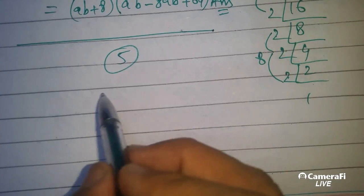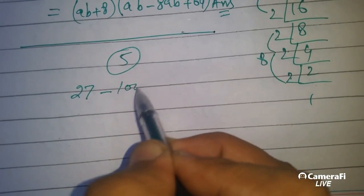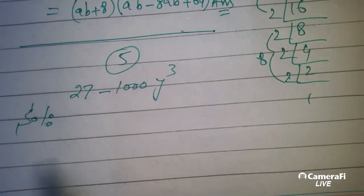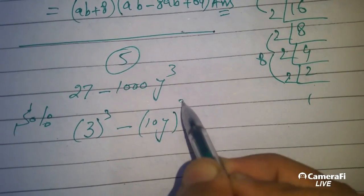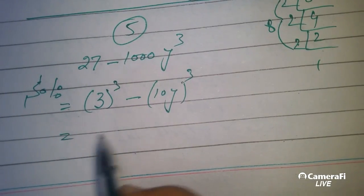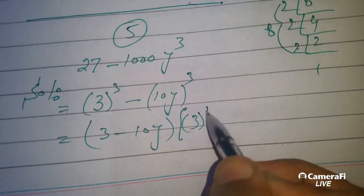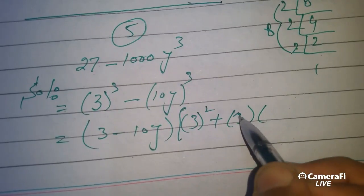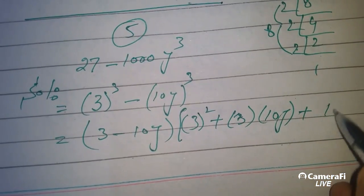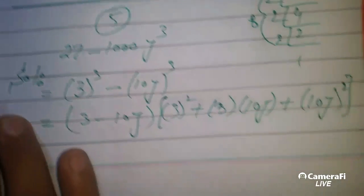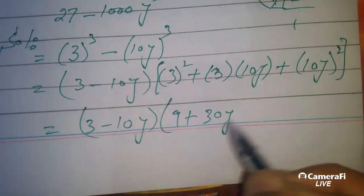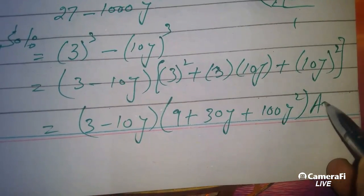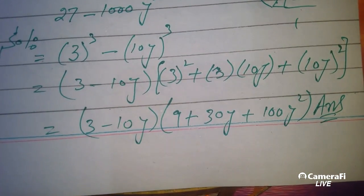Next question, question number 5: 27 minus 1000y cubed. So 27 is 3 cubed, 1000 is 10 cubed. Now apply the formula: first term minus second term, times first term squared plus first term into second term plus second term squared. This gives us 3 minus 10y, times 9 plus 30y plus 100y squared.